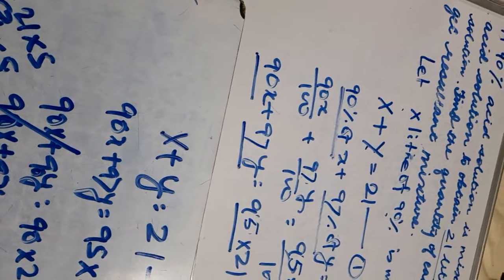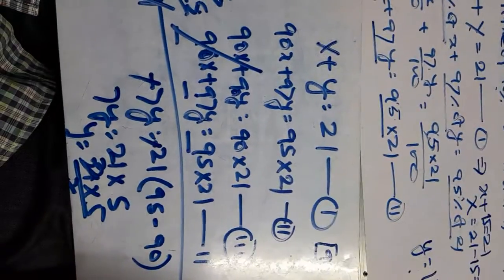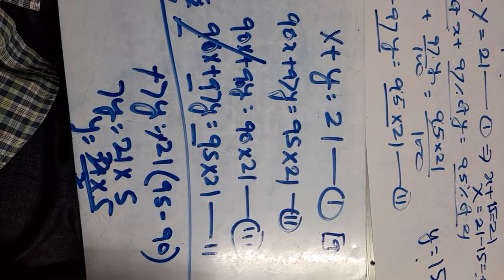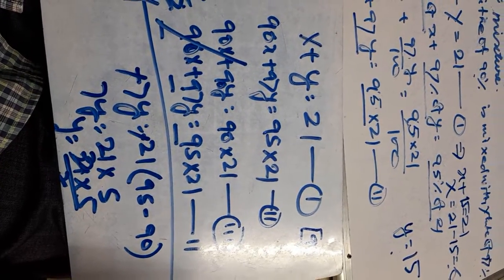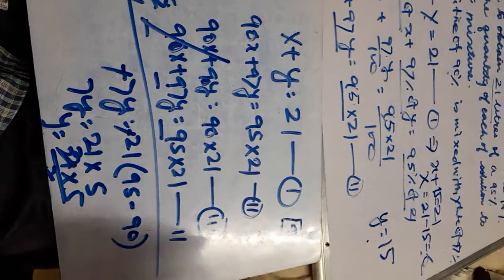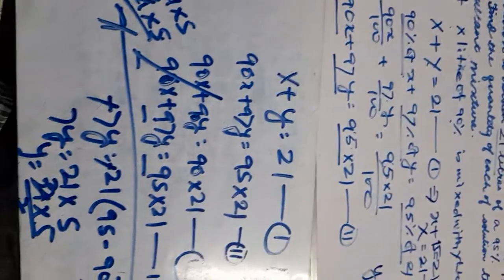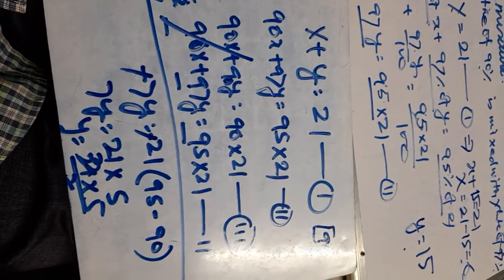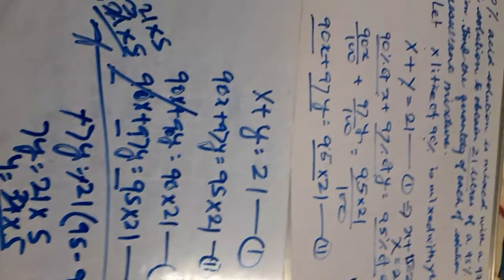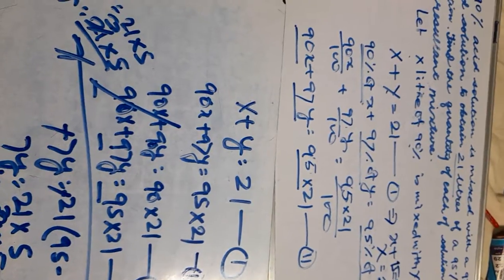So x equals 6. The final answer is: y equals 15 and x equals 6. That is, 6 liters of the 90% solution and 15 liters of the 97% solution.